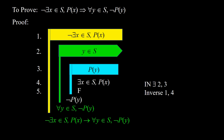So now we can conclude not py, and that is by applying the introduction of not to 2, 3, and 5, indicated with 6. Then we have for all y element of s, not py, indicated with 7. And finally we apply the introduction of implication to 1 and 7, and now we are done.